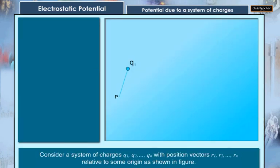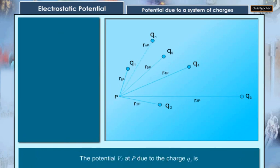Consider a system of charges Q1, Q2 and so on till Qn with position vectors R1, R2 and so on till Rn relative to some origin as shown in figure. The potential V1 at P due to the charge Q1 is calculated. Similarly, the potential V2 at P due to Q2 and the potential V3 at P due to Q3 are determined.